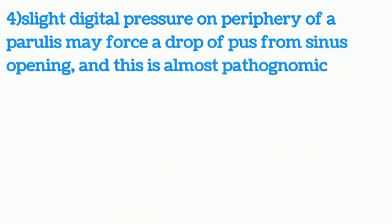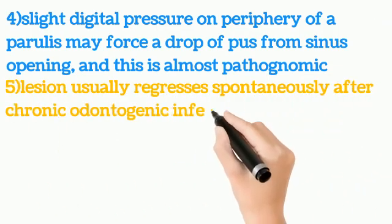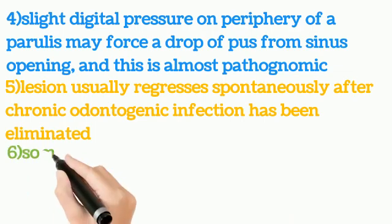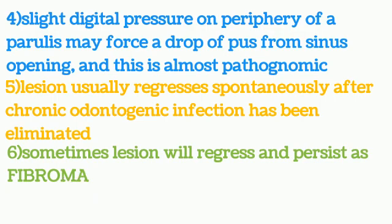The lesion usually regresses spontaneously after a chronic odontogenic infection has been eliminated. If it is of considerable size and there is a substantial amount of fibrosis, however, the lesion will regress somewhat and then persist as a fibroma. Very rarely, draining osteomyelitis or an infected malignant tumour may produce a similar lesion.